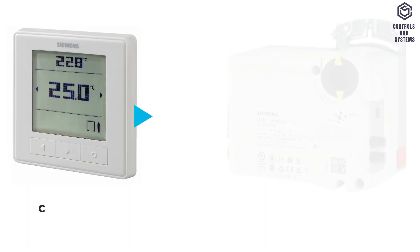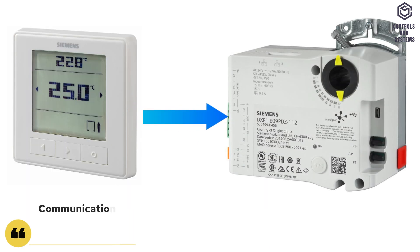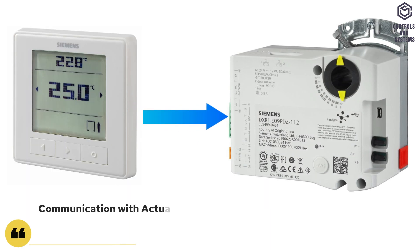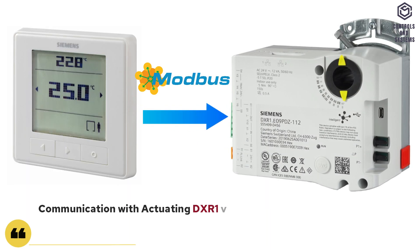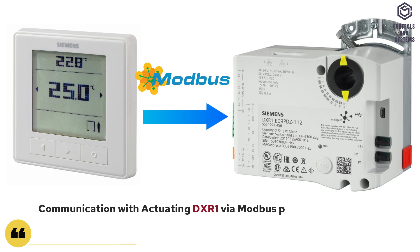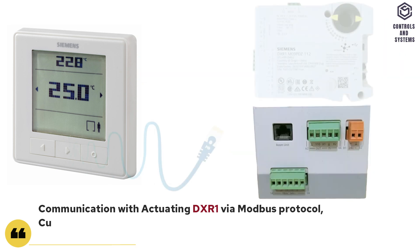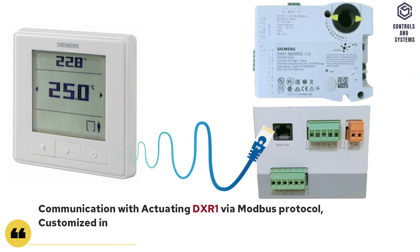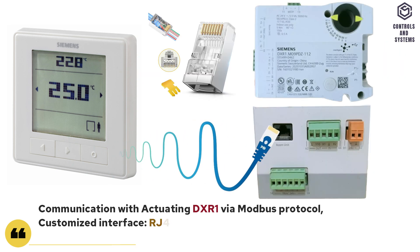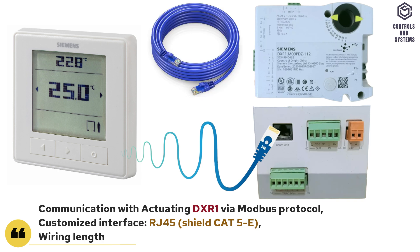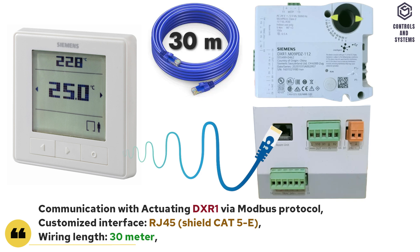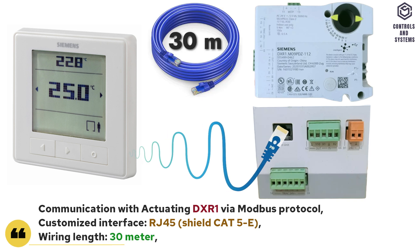Interfaces: communication with actuating DXR1 via Modbus protocol. Customized interface is RJ45, shield Cat 5e, wiring length is 30 meters.